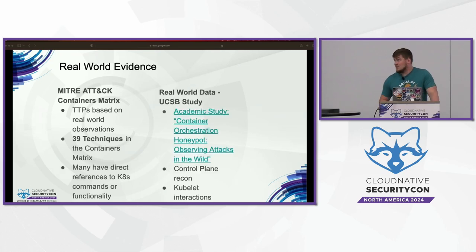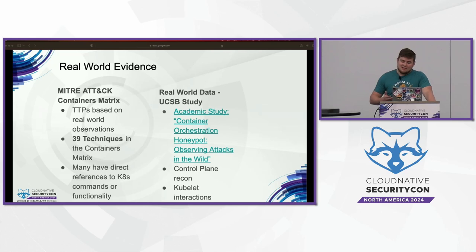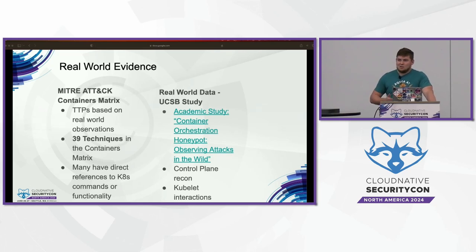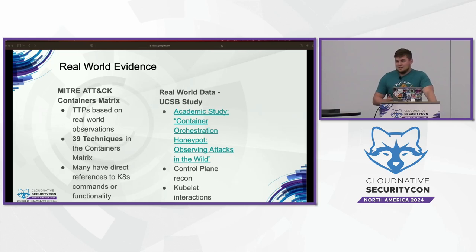The second, more specific data point — which I actually found while putting together this talk — is an academic study done by the University of California, Santa Barbara. They took different container orchestrator technologies including Kubernetes, exposed them to the internet, and watched what happened. There were automated attacks against the exposed Kubernetes cluster — crawling the control plane API, trying to create pods, trying to create service account requests, trying to get a foothold in the cluster. They also exposed the kubelet API, which you really shouldn't do, but there were automated attacks against that too, which implies adversaries have a higher-than-baseline understanding of Kubernetes and how to attack it.